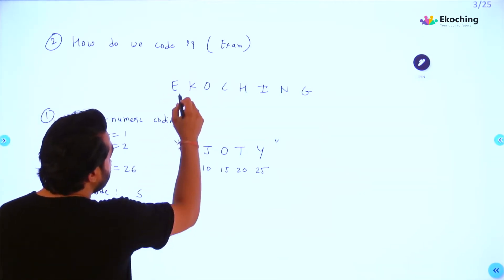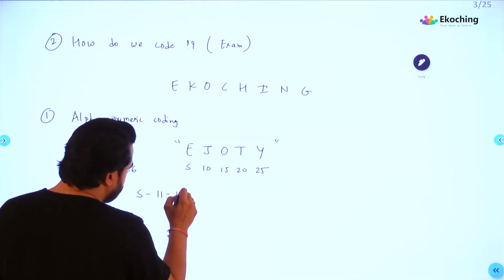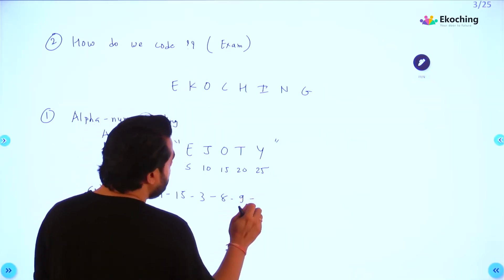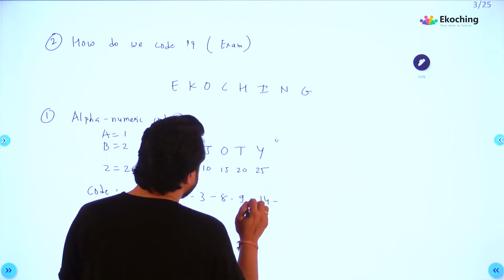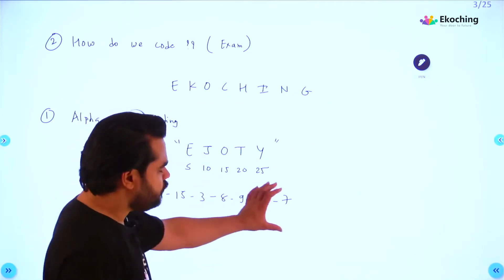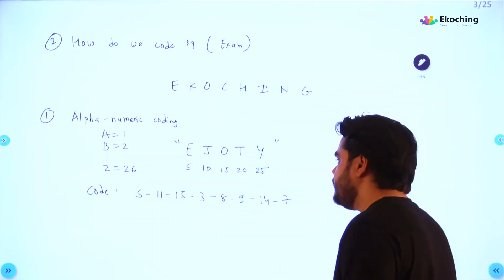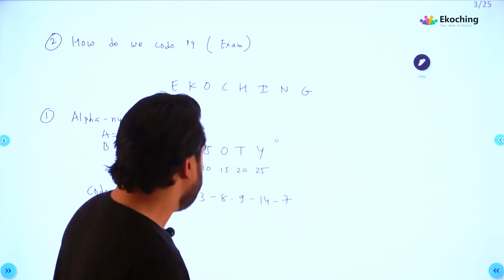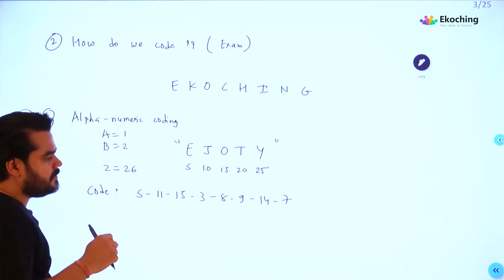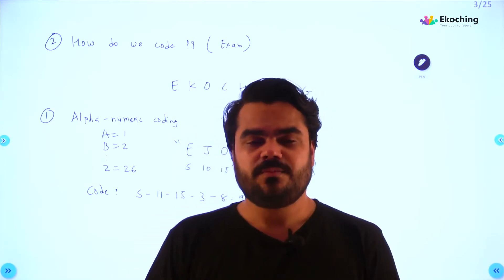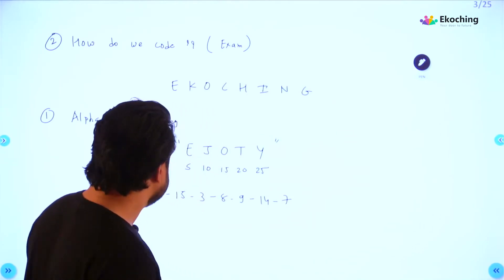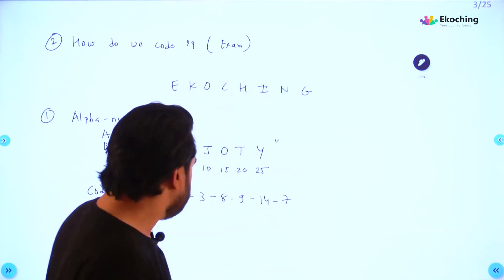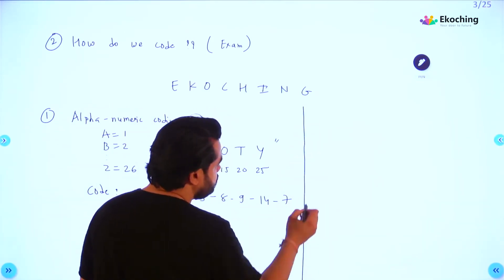Let's make a code for e-coaching remembering EJOTY. So what will be the code? E means 5, K means 11, O means 15, C means 3, H means H I J so H will be 8, I will be 9, N will be M N O so N will be 14, G will be E F G so 7. This is the code for e-coaching in alphanumeric code. Now if this is the code, what will we do to decode it? Please understand, if there is a coding key, there has to be a decoding key. What was the coding key? Convert alphabet to numeric, simple. You should know how to code and also how to decode.